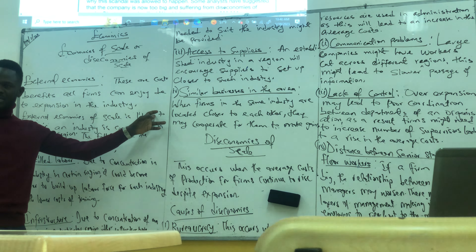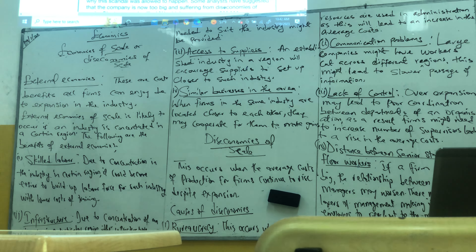What are the benefits an industry will be able to enjoy when it is concentrated in a certain region? Number one: skilled labor. Due to concentration of the industry in certain regions, it will become easier to build up a workforce for such industries with lower cost of training. Since all schools are situated in Tripoli, enough teachers will be available there, and the training cost for teachers will be less because there are many more teachers available.